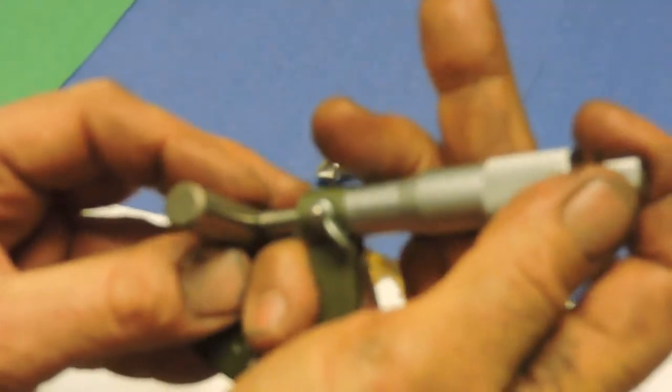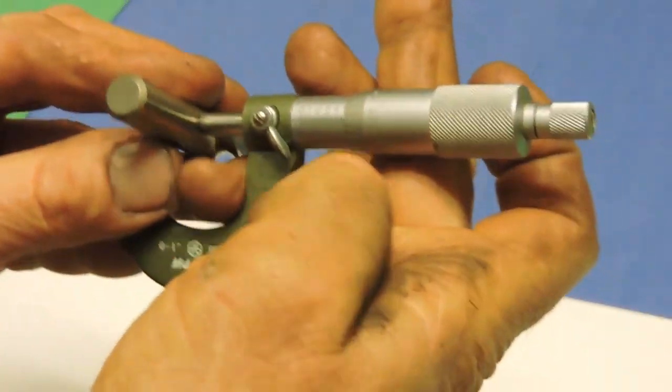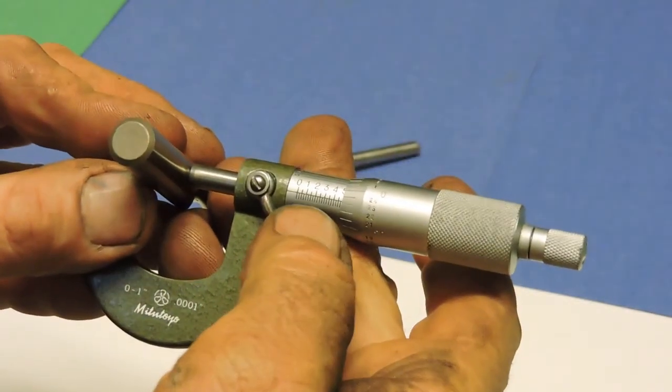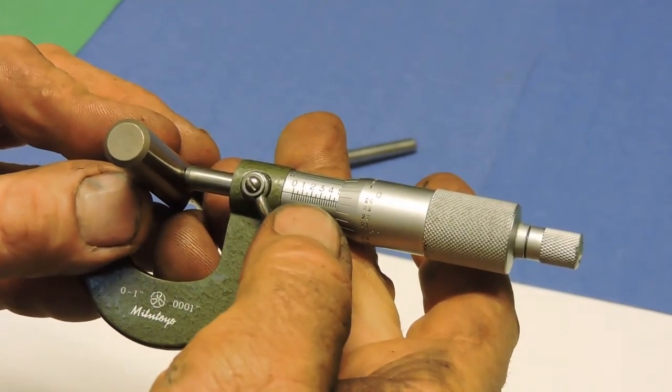I'm going to insert it slightly, put some pressure on it, turn the thimble, and try to center it. We can clearly see that we are 0.2...